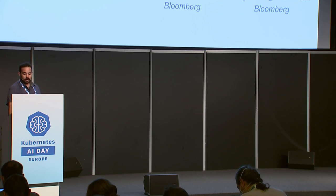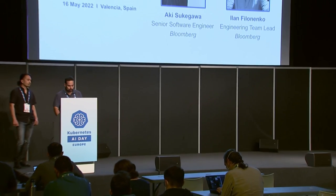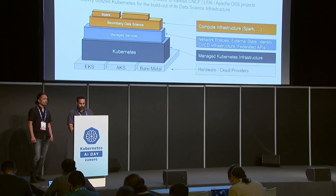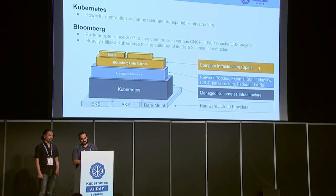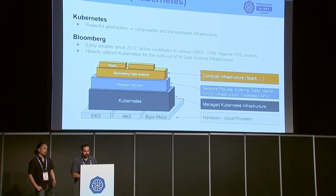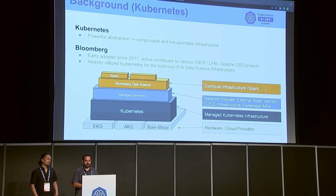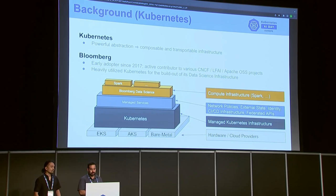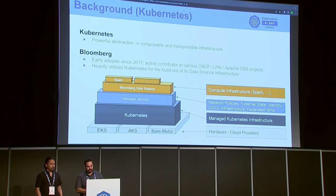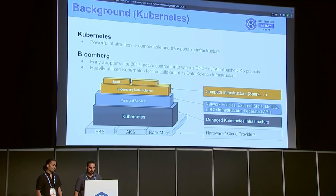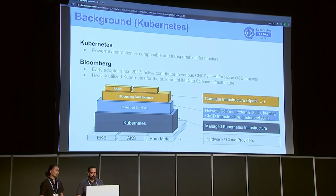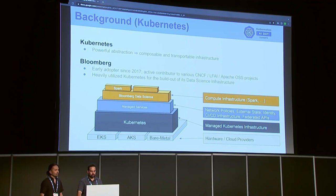Today we'll be talking about managing multi-cloud Apache Spark on Kubernetes. Managing data science infrastructures in a multi-cloud environment is really hard. The variation of behavior between different hardware and cloud providers is vast and rather daunting. Kubernetes in its cloud-native design provides an extraordinarily powerful abstraction across all these hardware stacks and enables the building of highly composable and transportable infrastructure substrates.